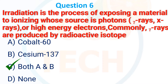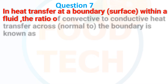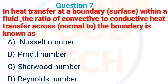The correct answer is C — both Cobalt-60 and Cesium-137. Next MCQ: In heat transfer, the ratio of convective to conductive heat transfer across a boundary layer within a fluid, normal to the boundary, is called what? Options: (A) Nusselt number, (B) Prandtl number, (C) Sherwood number, (D) Reynolds number. The correct answer is A — Nusselt number.